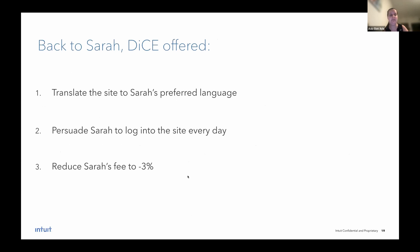So back to my churn example to Sarah and Amy. DICE offered Amy a few things she can do in order to make the model predict that Sarah will not churn. The first is to translate the site to Sarah's preferred language, which apparently isn't English. The second is to persuade Sarah to log into the site every single day. And the third is to reduce Sarah's fee to minus 3%. So if we take a look at these counterfactual options, the first is actually something that can easily be done. The second is possible, but it's very hard to achieve. And the third isn't even feasible.